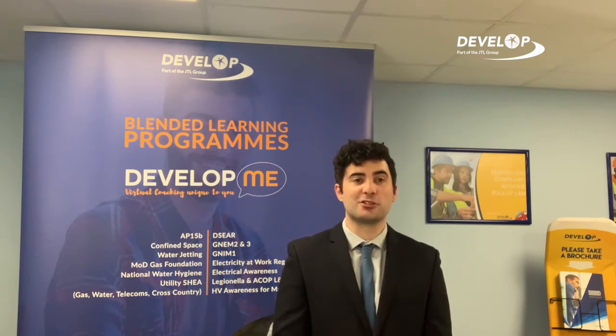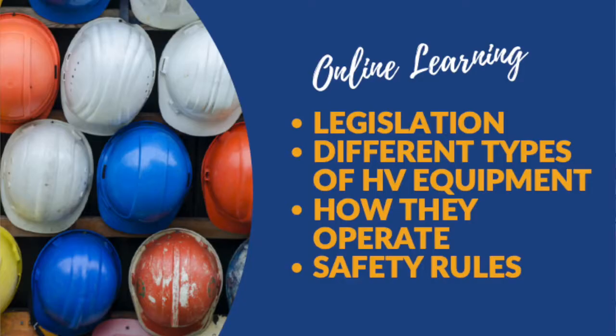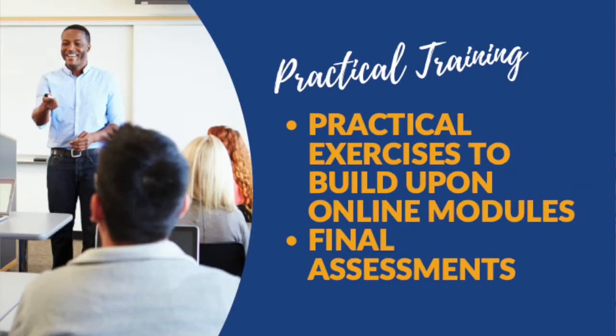This course is split into two sections: online learning and practical training. Online learning covers areas such as legislation, the different types of high voltage equipment, how they operate, and the application of safety rules on site. Once the online learning is completed, you will come into one of our training centres where you will carry out practical exercises to build upon the online modules and complete the final assessments.